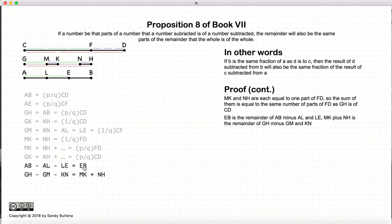Now, EB. Well, let's look at it this way. We have AB minus AL minus LE would result in this bit left over, EB. If we take GH, subtract off GM and KN, we're left with MK plus NH. Now, AB is equal to GH by definition, AL and GM are equal by definition, LE and KN are equal by definition, so therefore we have that EB is equal to MK plus NH.